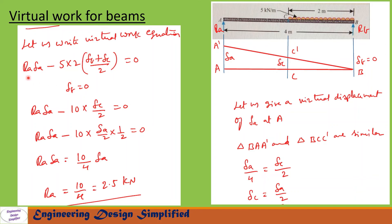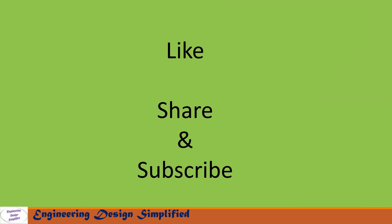Now let us write the virtual work equation for R_A: R_A × delta_A − 5 × 2 × (delta_B + delta_C) / 2 = 0. Since delta_B = 0, R_B does not appear. Substituting delta_C = delta_A / 2 and simplifying, we get reaction at A: R_A = 2.5 kilonewton. That's all for today's video. If you like this content, please like, share, and subscribe. Thanks for watching.